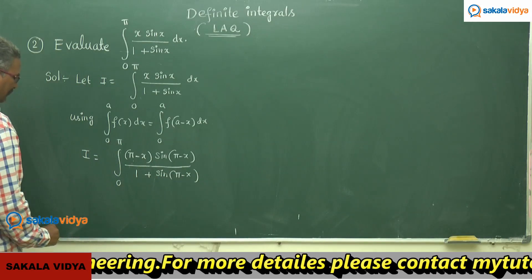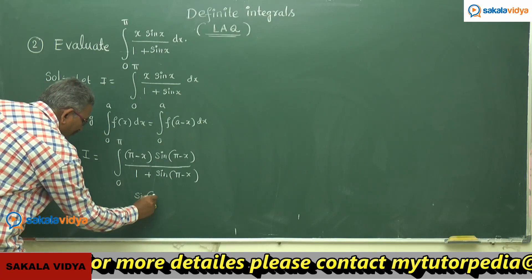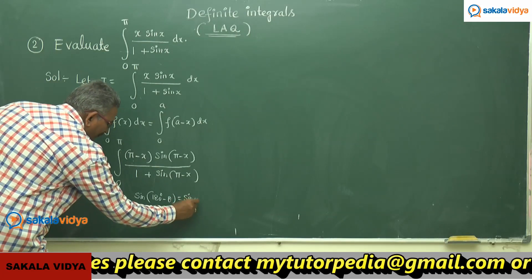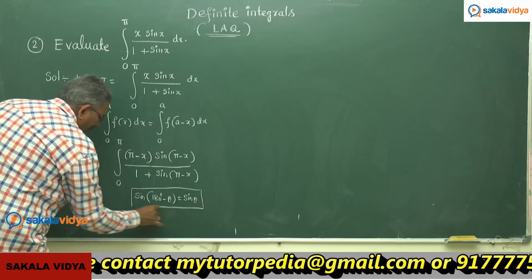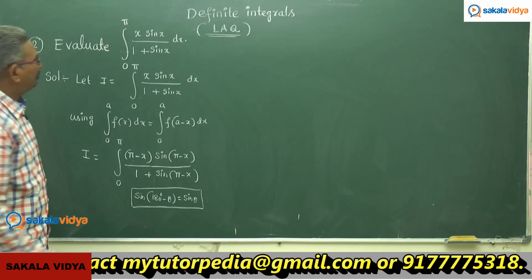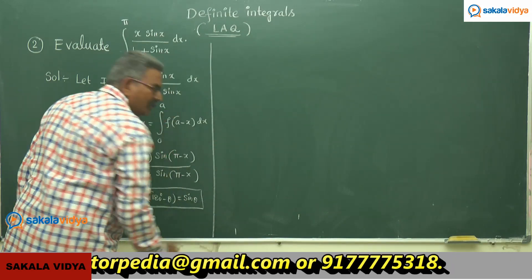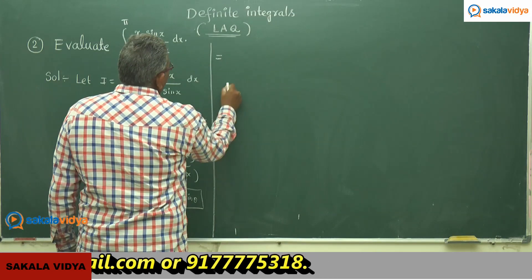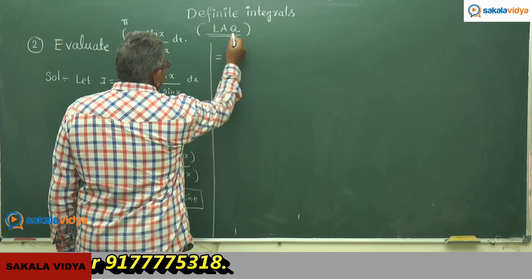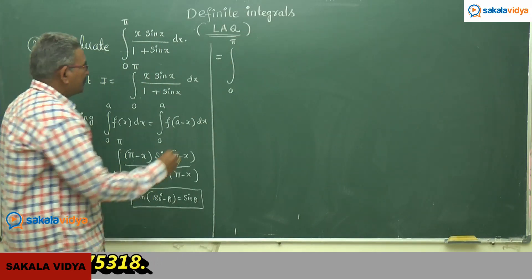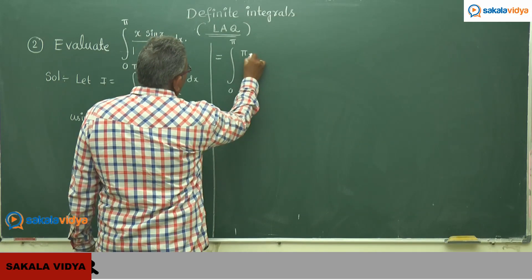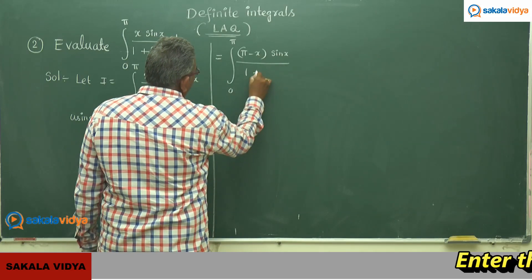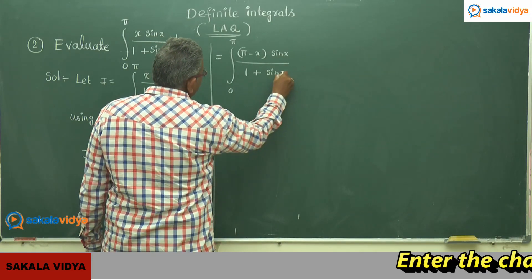We use the identity sin(180° minus θ) equals sin θ, which we are familiar with. So using sin(π minus x) equals sin x, this becomes integral 0 to π of (π minus x) sin x by 1 plus sin x dx.